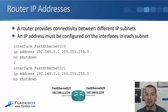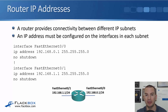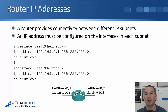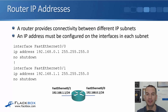So the routers need to have interfaces in the different subnets and they need to have IP addresses on those interfaces. Those IP addresses will act as the default gateway address for any hosts that are in that subnet.